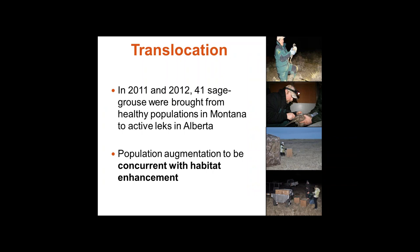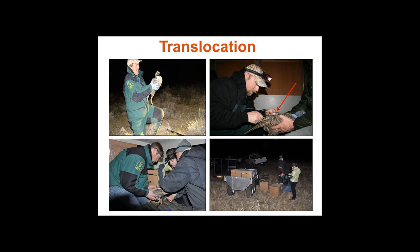In 2011 and 2012, 41 sage-grouse were brought from healthy populations in Montana and moved up to active leks in Alberta. This population augmentation was to be concurrent with habitat enhancement. Biologists used spotlights from ATVs to catch the eye glare of birds, netted them, took blood and feather samples, and attached solar-powered GPS backpack-style transmitters painted for camouflage. The birds were then transported to Alberta and released onto active leks around sunset.